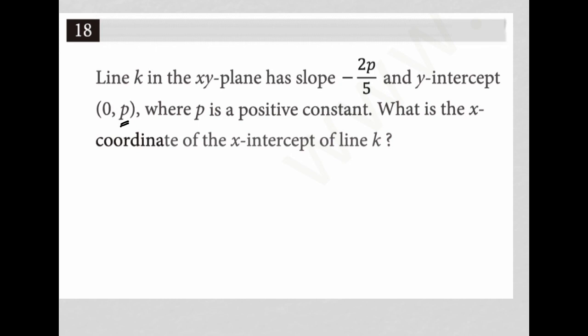Since I don't know what P is, I can't actually figure out the slope. But I am going to just write down K equals, actually it's line K, so I'm going to say Y equals negative 2P over 5X plus P. This is just my Y equals MX plus B, and I'm replacing everything that I've been given, like I'm replacing slope with what I was told slope is, and replacing the Y intercept with what I was told the Y intercept is.